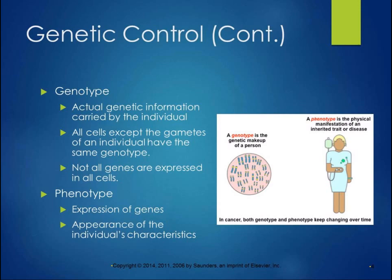The genotype is your actual genetic information — the genes that you have. All of our cells, except our gametes, have the same genotype. So a cell in your liver, a neuron, a skin cell in your pinky toe, a cell from your small intestine, a cell in your retina — they all have the same genotype. Not all genes are expressed in all cells, and it's still somewhat of a mystery how, during development, some genes are expressed and some are not.